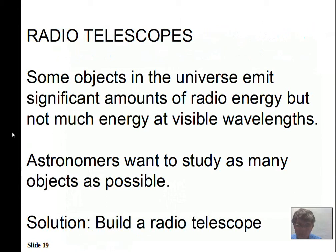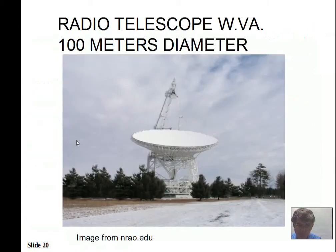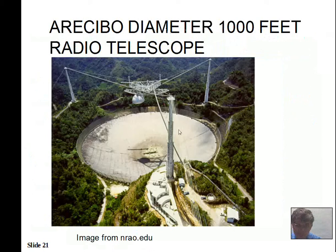Radio telescopes started in the 1930s to gather radio information from the universe. Some objects emit more energy in radio waves than in visible light, so astronomers want to study objects using as many wavelengths as possible. Radio signals are inherently very weak — the weakest in the electromagnetic spectrum — so you need a really large area to gather enough energy to detect. One telescope is 300 feet in diameter. The Arecibo telescope in Puerto Rico is 1,000 feet in diameter, built into natural topography almost the right shape, with metal reflecting radio waves up to the receiver.